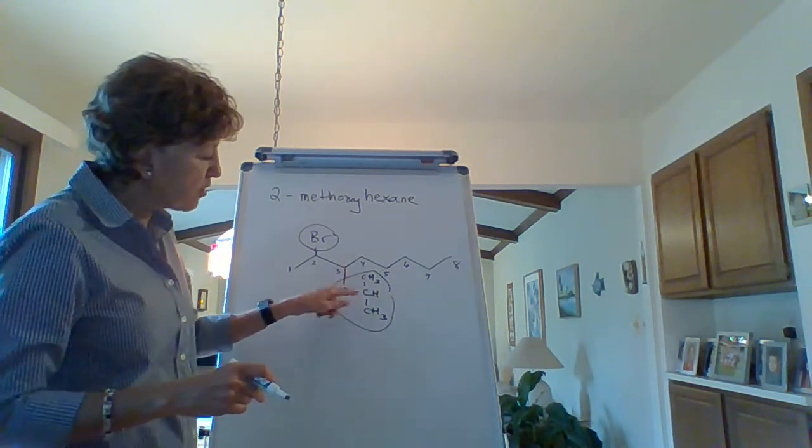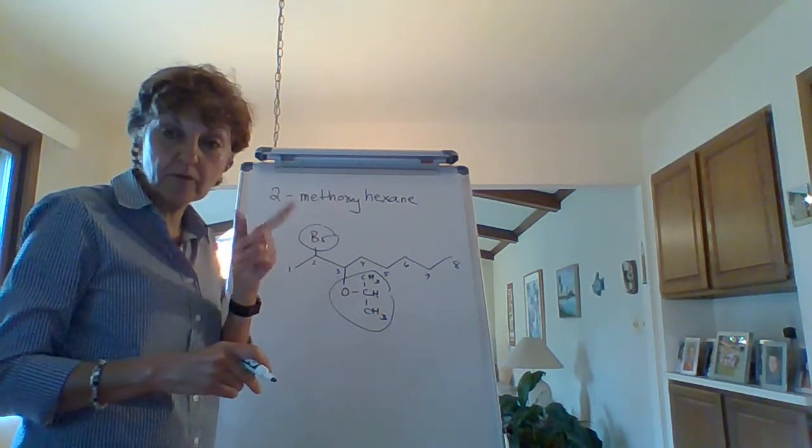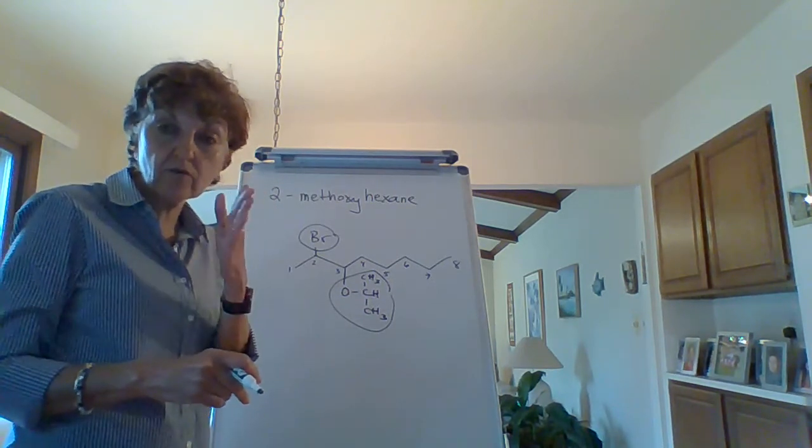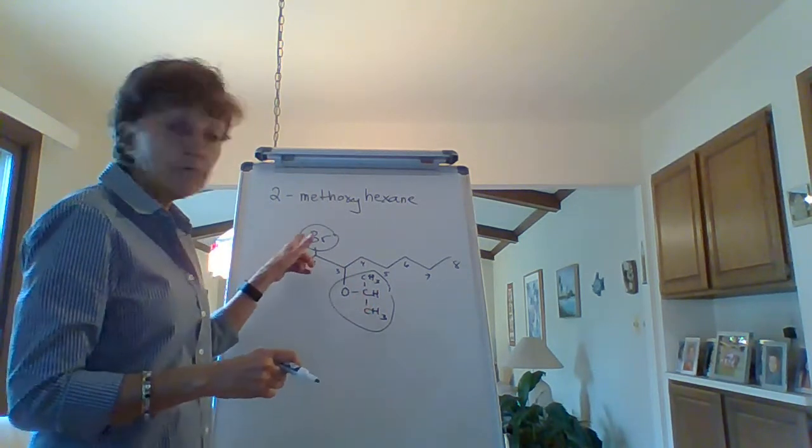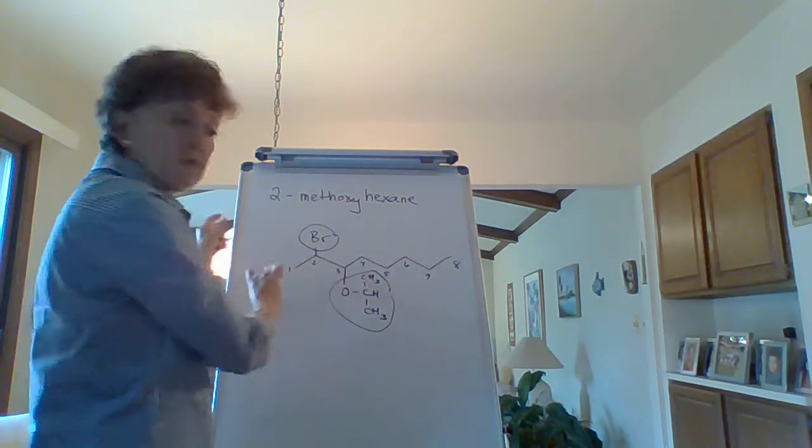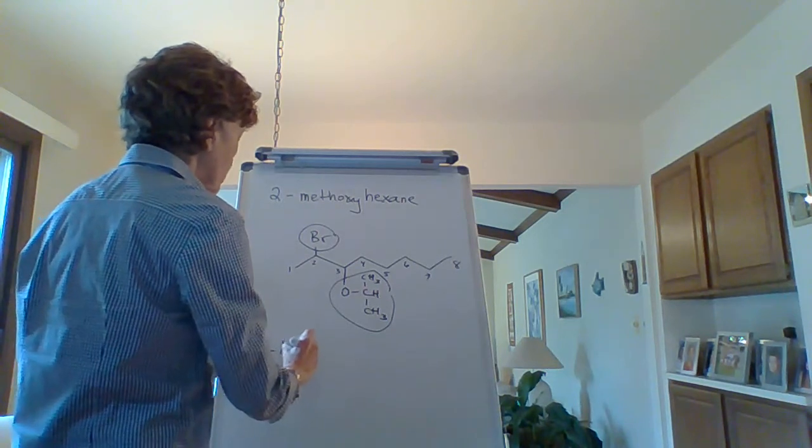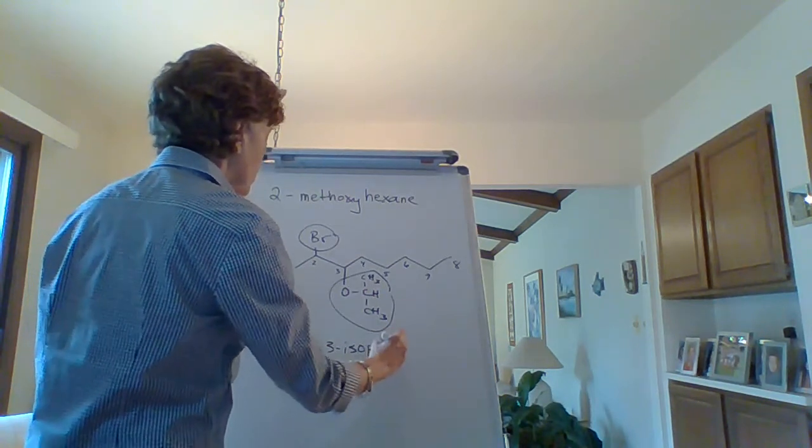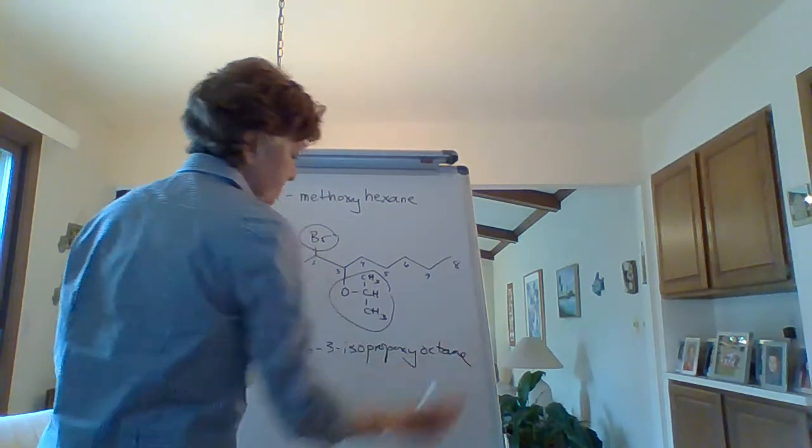If you recognize this is three carbons hooked up from the middle carbon—three carbons was propyl, but if it's hooked up from the middle carbon, it's isopropyl—we're going to get rid of the YL and put in oxy. This is isopropoxy and this is bromo. B comes before I. We number left to right because the substituents are closer to this side: 2-bromo-3-isopropoxyoctane.